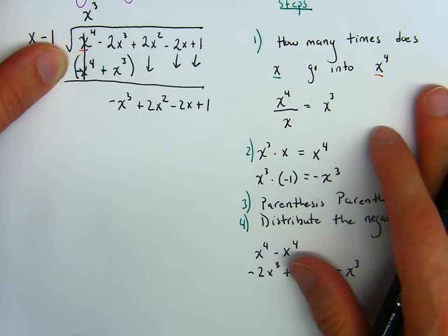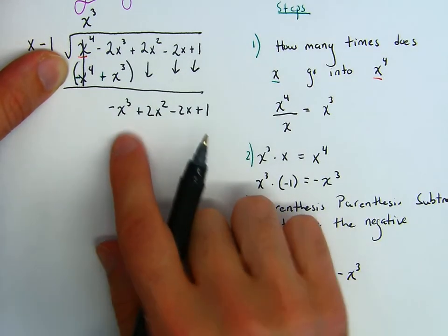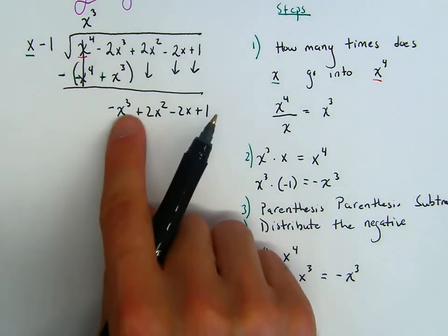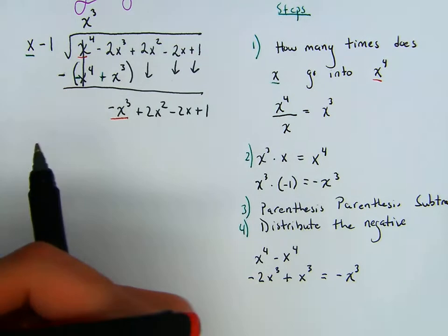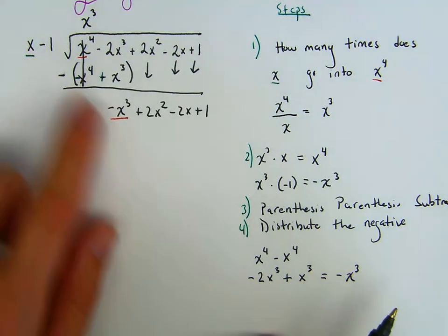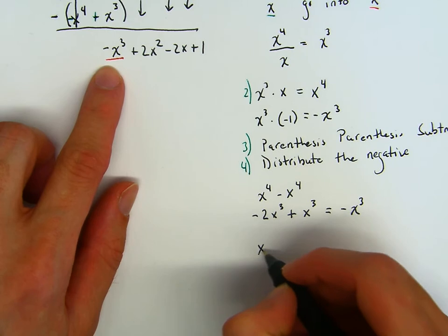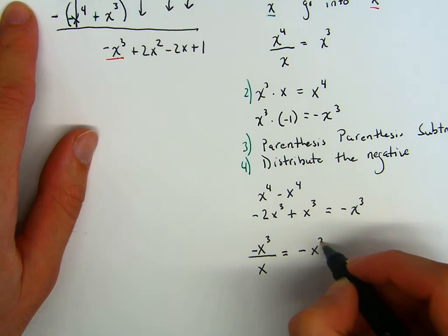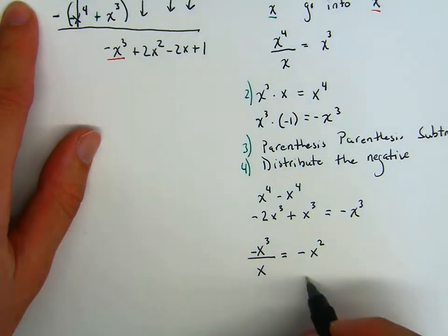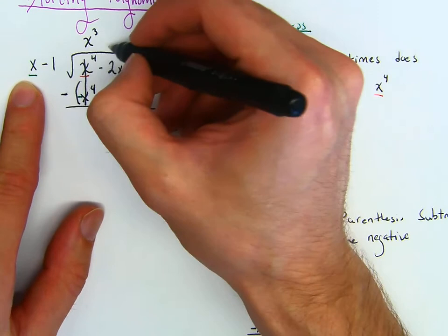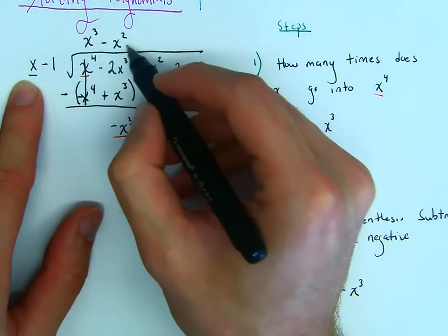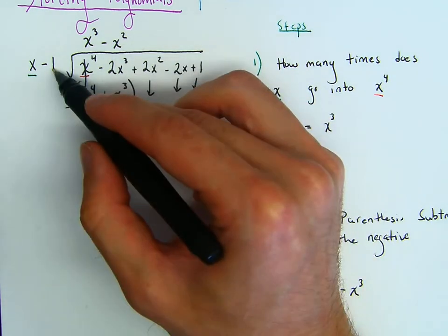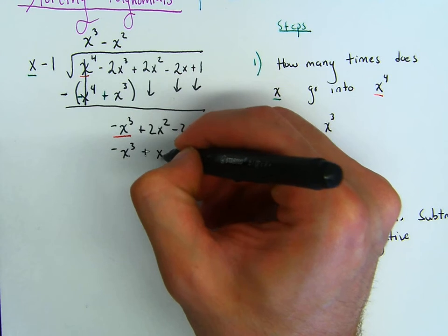Then how would we continue the problem? We would repeat the pattern. We would say, how many times does this x go into this negative x cubed? We would have this negative x cubed on top, this x is on the bottom, and what would we get? Negative x squared. So then what do we do with this negative x squared? We put it up here.